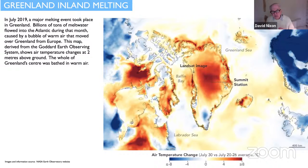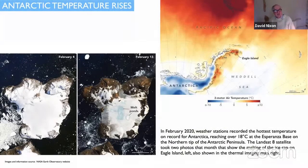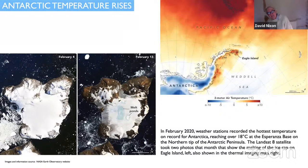So I've included some examples of what's going on, which are quite alarming actually. This is in 2019 when a major melting event took place in Greenland. Billions of tonnes of meltwater flowed into the Atlantic that month, caused by a bubble of warm air that moved over Greenland from Europe. This map taken from a satellite shows the air temperature changes at two meters above the ground in the center of Greenland.